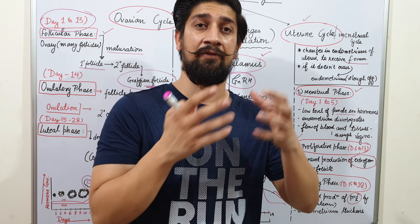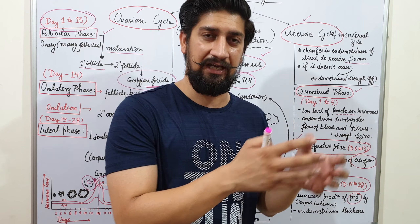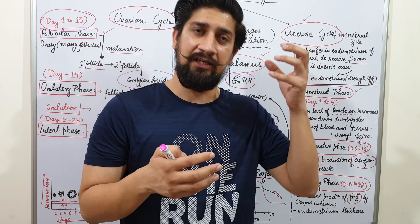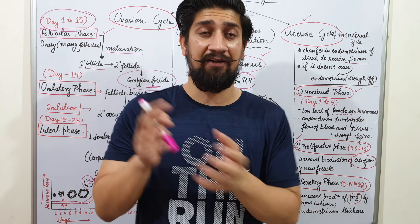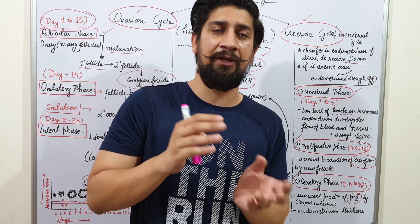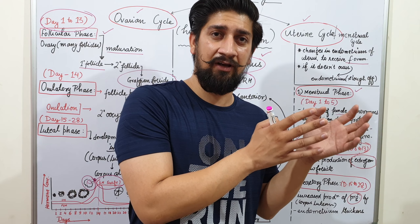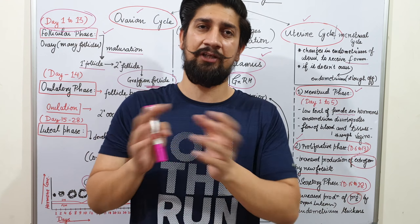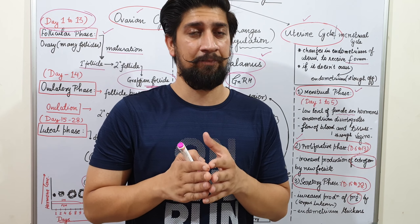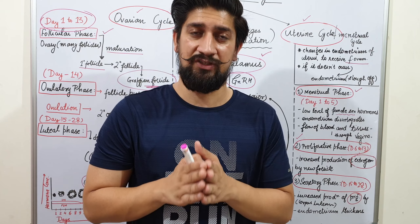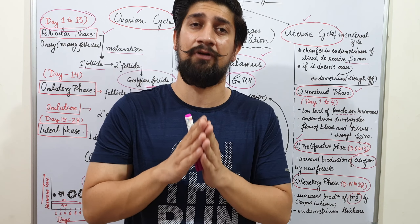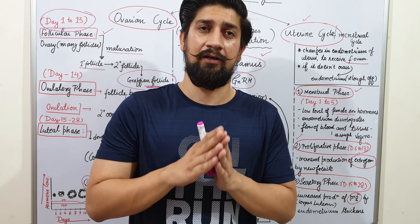Every month, this cycle is repeated — the uterus prepares itself and a new follicle develops into an ovum. This happens alternatively: one month the left ovary is functional, the next month the right ovary functions. This continues until menopause, when the menstrual cycle ceases — which occurs at approximately 50 to 55 years of age in females.